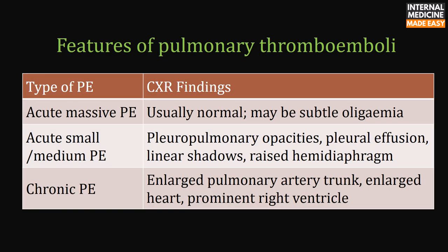Features of pulmonary thromboemboli: in acute massive pulmonary embolism, chest X-ray findings are usually normal but there may be subtle oligemia. In acute small or medium embolism, there may be pleuropulmonary opacities, pleural effusion, linear shadows, or raised hemidiaphragm. In chronic embolism, there may be enlarged pulmonary artery trunk, enlarged heart, or prominent right ventricle.